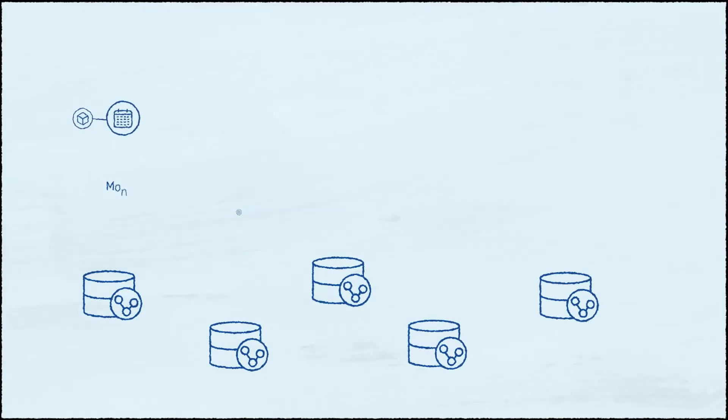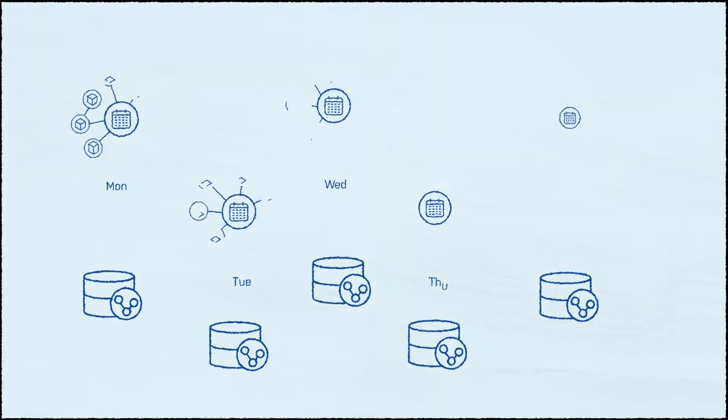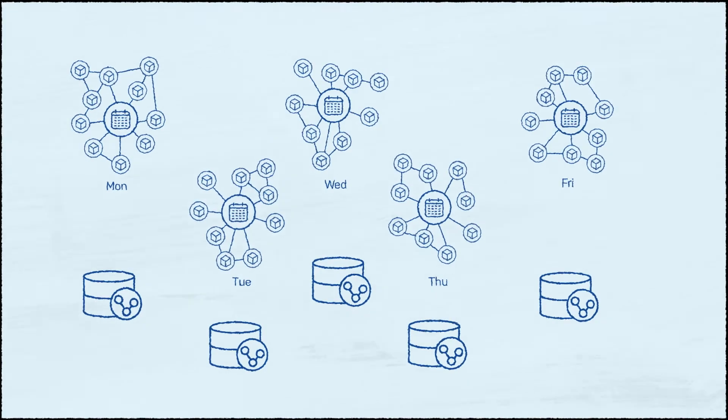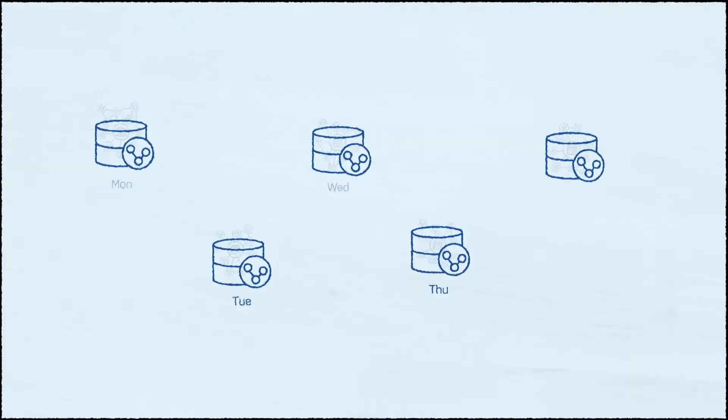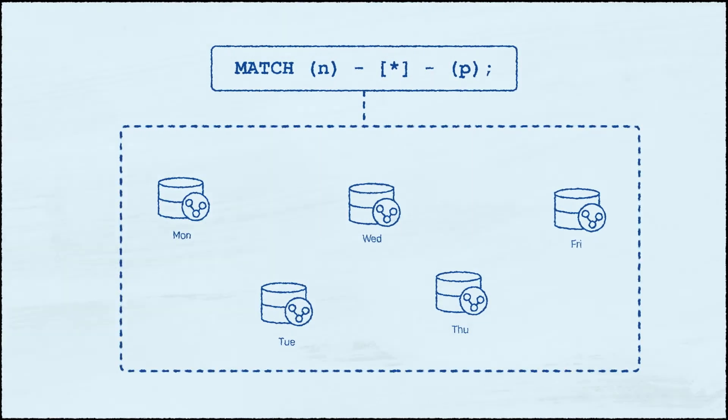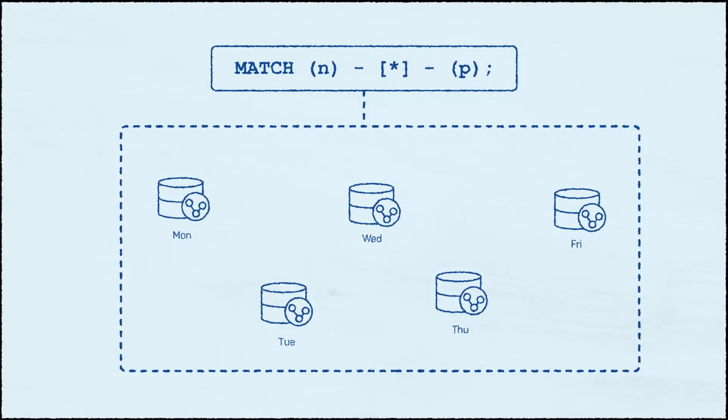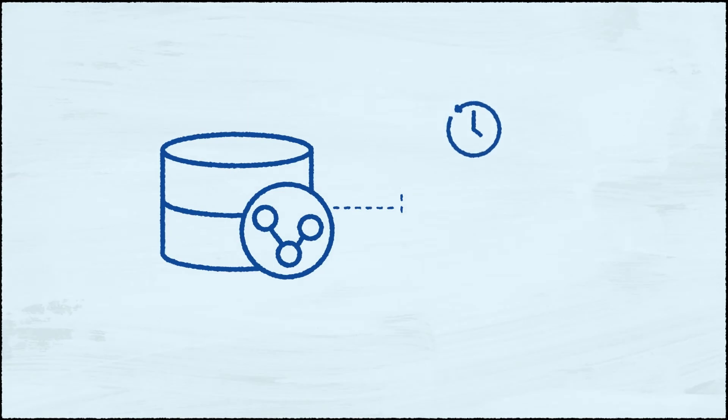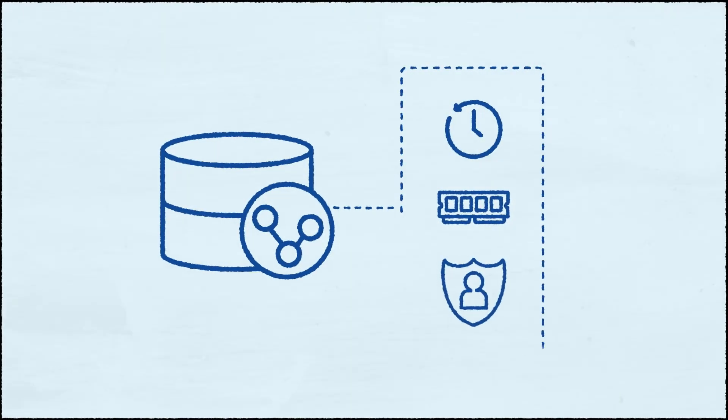We can apply this idea to the day range example from before. We can choose to have a separate database for each day of the week and query them via Fabric as if they were a single graph. At the same time, each individual graph can form an independent administrative entity with its own backup schedule, hardware or access rules.